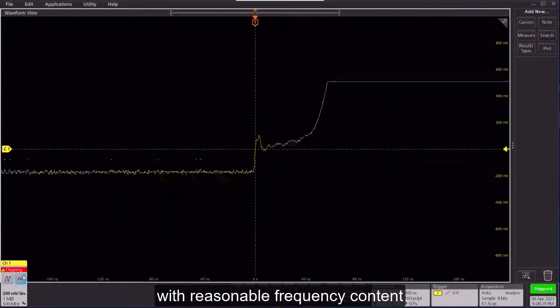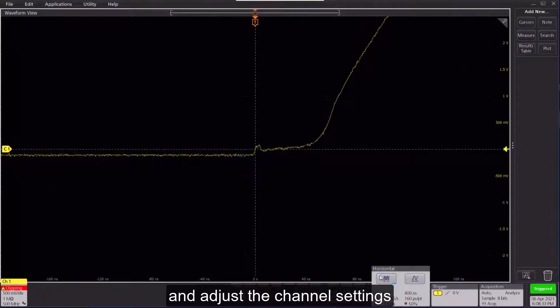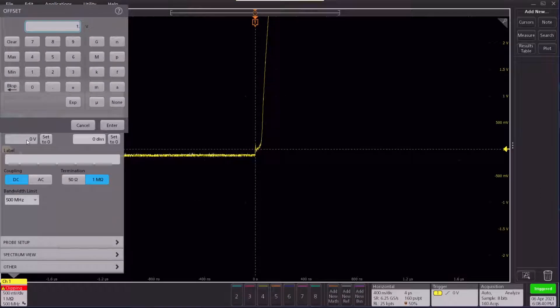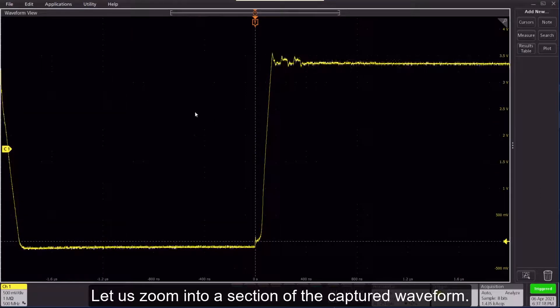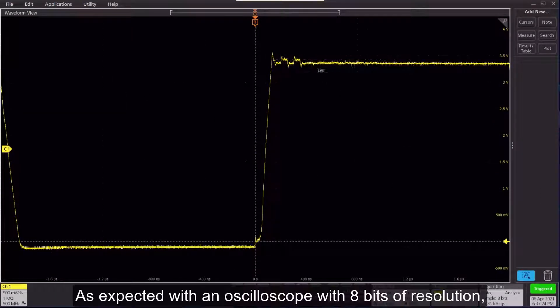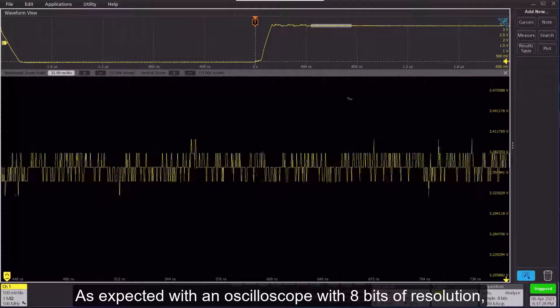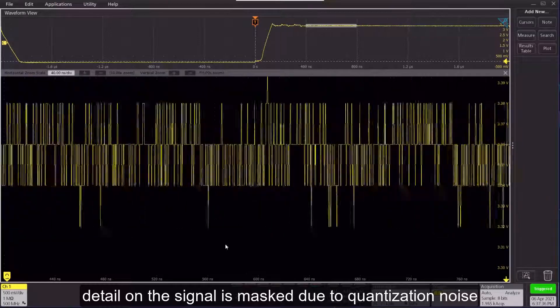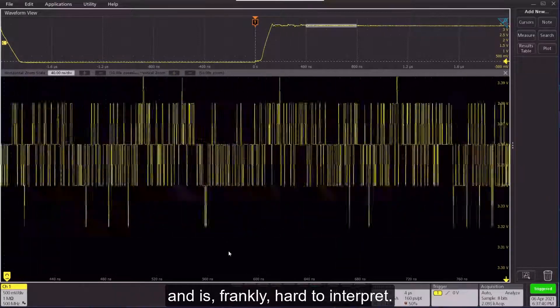We will now connect a signal with reasonable frequency content and adjust the channel settings to capture the entire signal. Let us zoom into a section of the capture waveform. As expected with an oscilloscope with 8 bits of resolution, detail on the signal is masked due to quantization noise and is frankly hard to interpret.